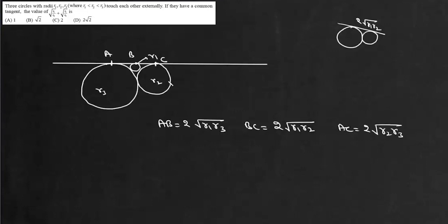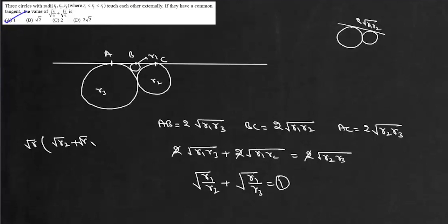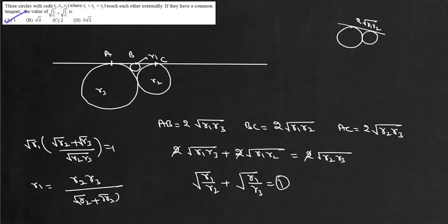BC = 2√(r1·r2) and AC = 2√(r2·r3). Now AB + BC = AC, so we get 2√(r1·r3) + 2√(r1·r2) = 2√(r2·r3). The 2s cancel, and dividing everything by √(r1·r3), we get √(r1/r2) + √(r1/r3) = 1, which is option A. This also gives the standard result: (√r2 + √r3) / √(r2·r3) = 1, so the radius of the smaller circle r1 = r2·r3 / (√r2 + √r3)².